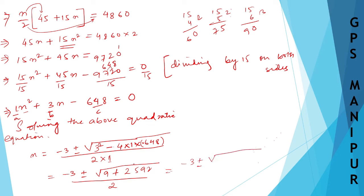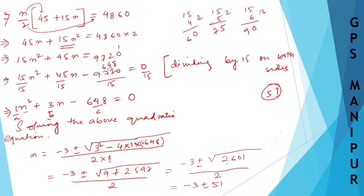If you find the square root of 2601, you get 51. So N is equal to minus 3 plus or minus 51, divided by 2.